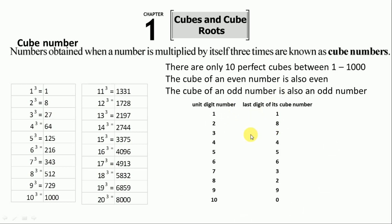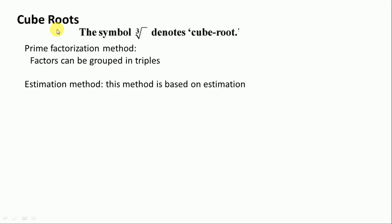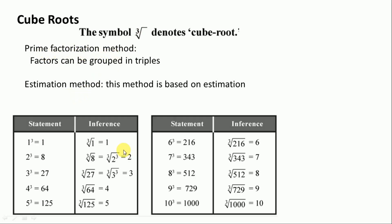Let's move to next one. Next is cube root. The symbol of cube root is like this, and we find cube roots from two methods: prime factorization method and estimation method.